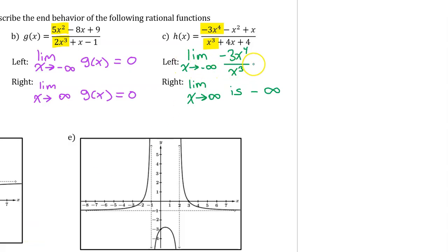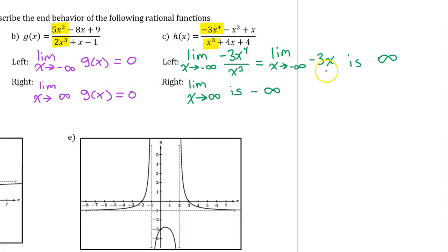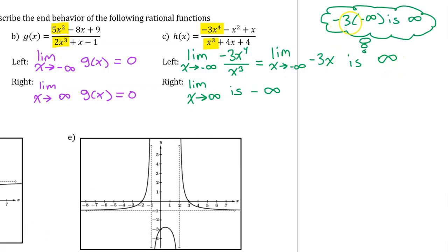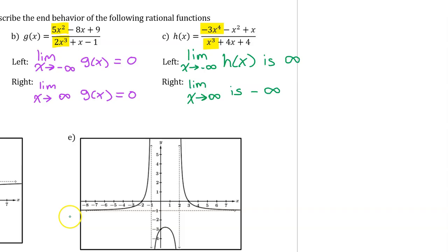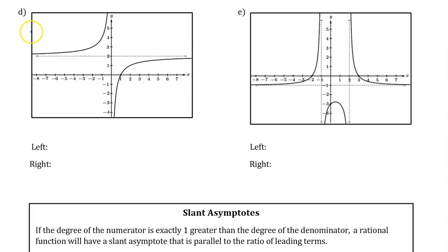For the left end behavior, the expression simplifies the same way, but this time the limit is positive infinity because as x approaches negative infinity, those x values are negative numbers, giving negative 3 times a negative — which is positive. Also, don't make the mistake of omitting h(x) when writing the limit statement; without it the notation is improper and you will lose points.